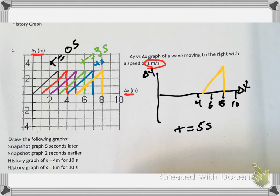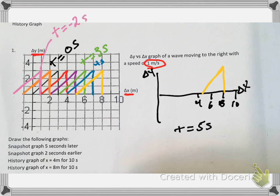Now it asks for it two seconds earlier, and earlier means we're basically going back in time. This orange line is going to be one second before t equals zero. And then this pink line here is going to be t equals negative two seconds, for lack of a better way to put it. So if we went back in time, that's where it would have been two seconds before time zero. If we drew it on this axis, it would look like this — there's our t equals negative two seconds.